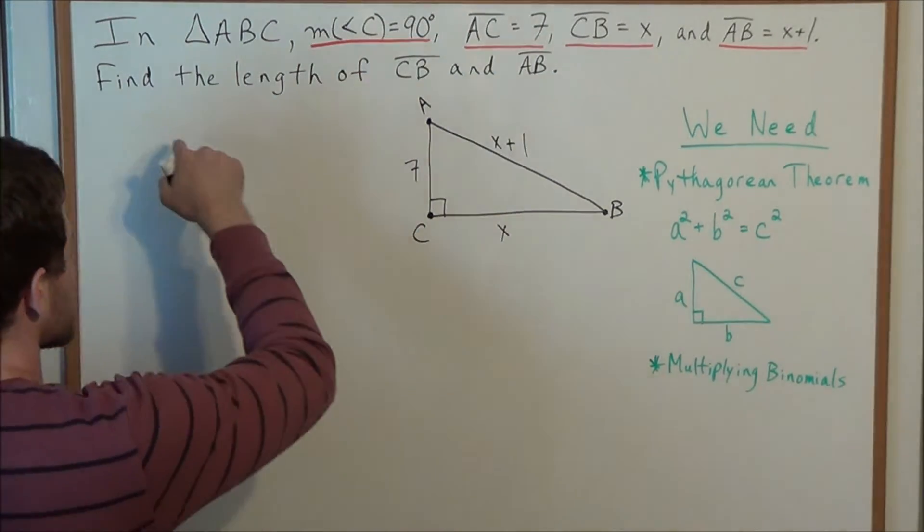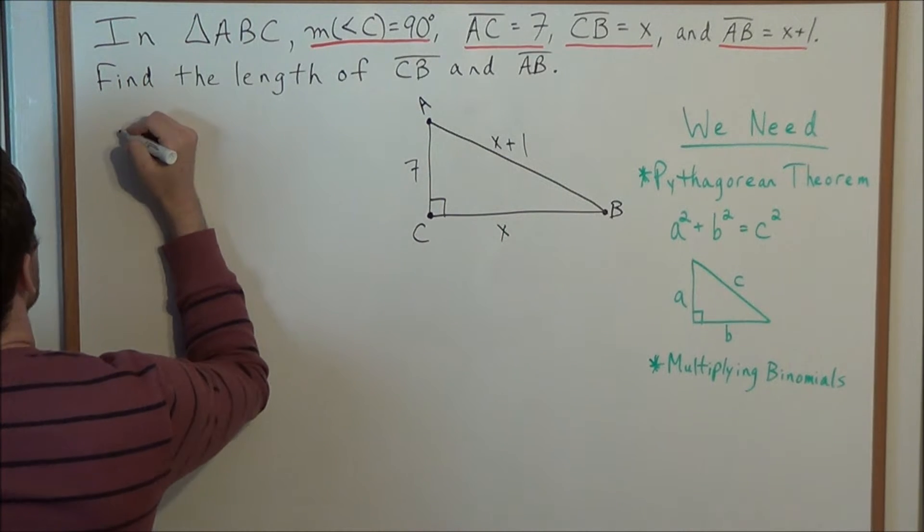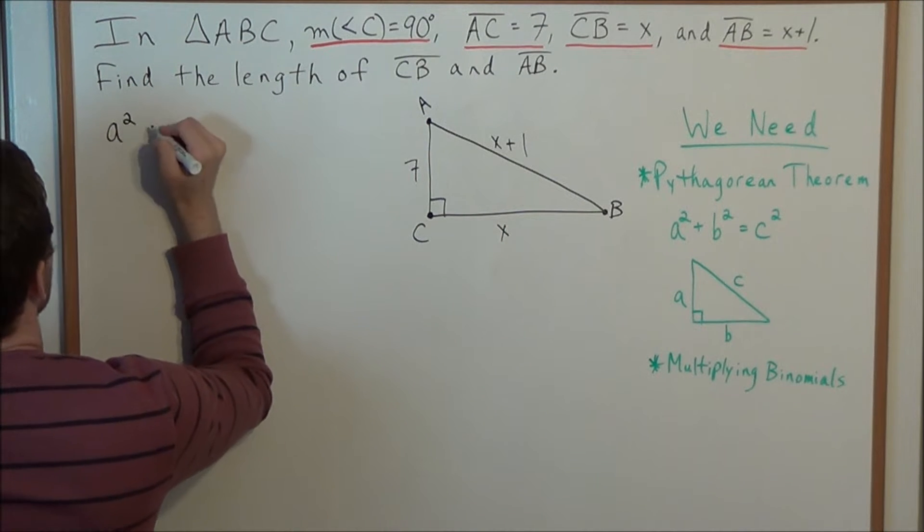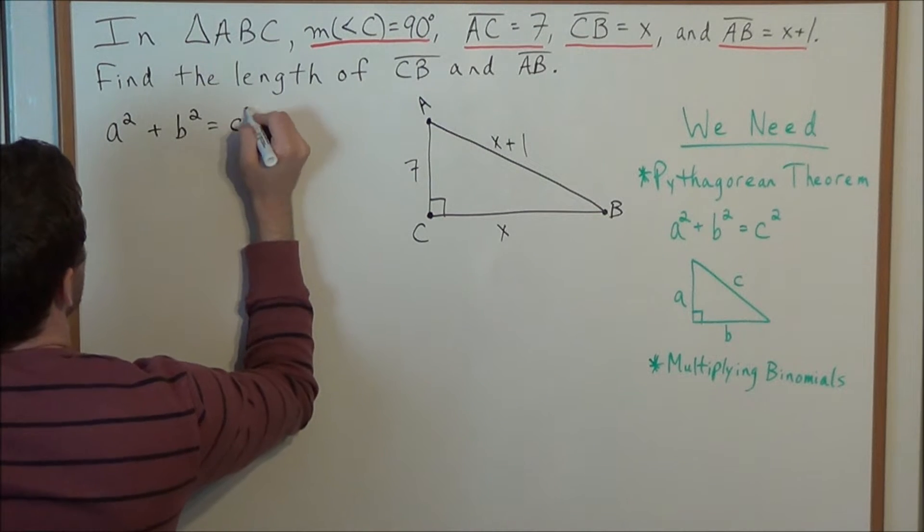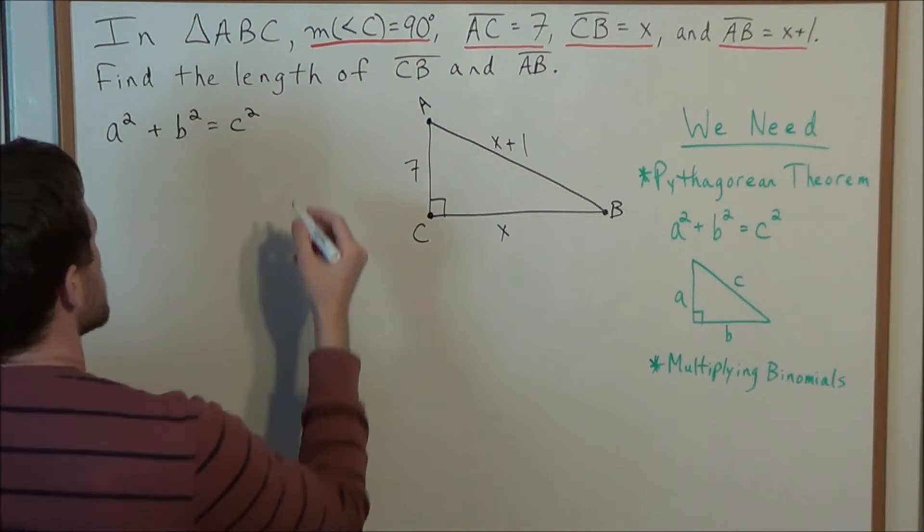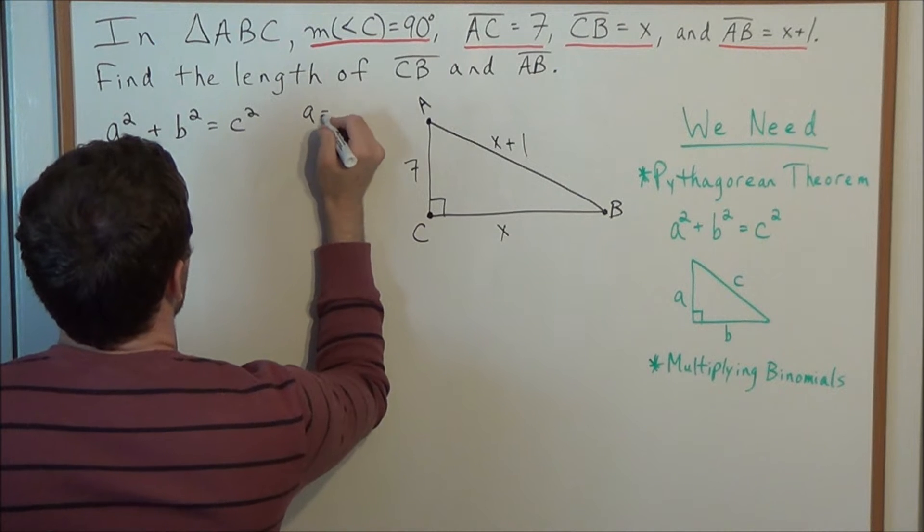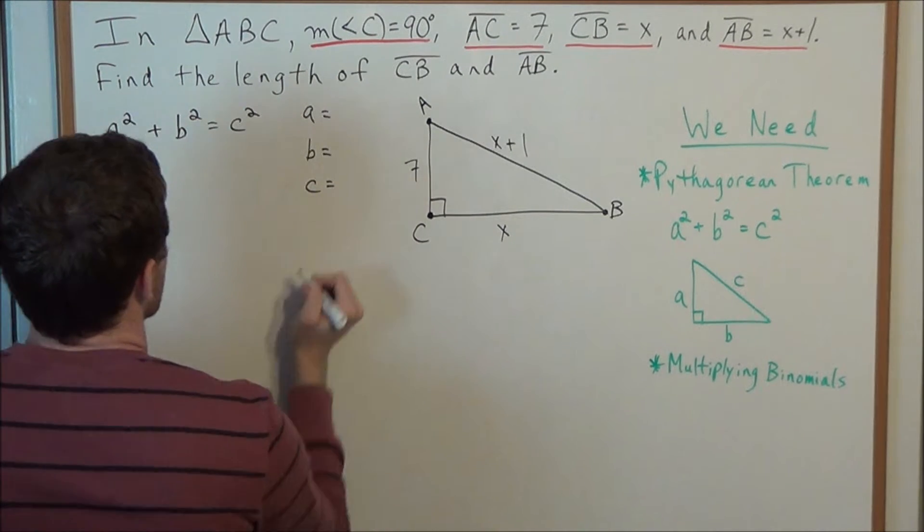So we'll apply that to this triangle here. Remember in general we have A squared plus B squared equals C squared, which is the hypotenuse. So we can substitute. We have A equals, B equals, C equals.